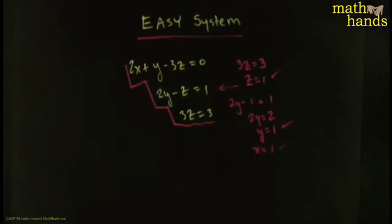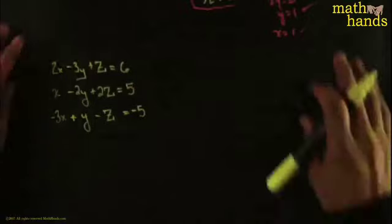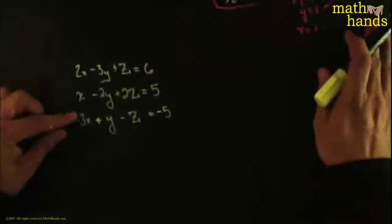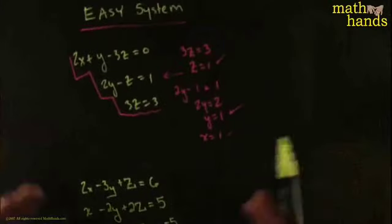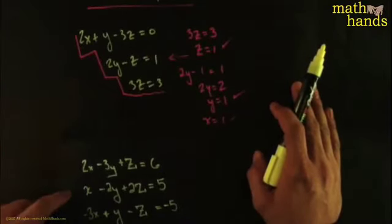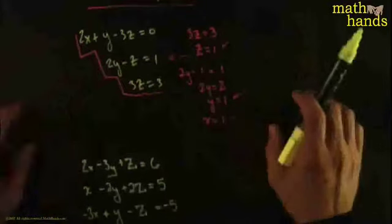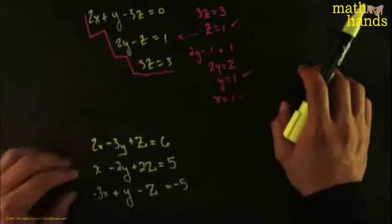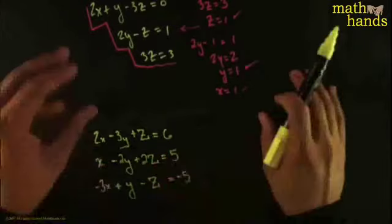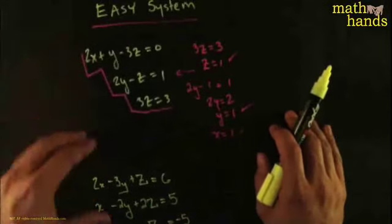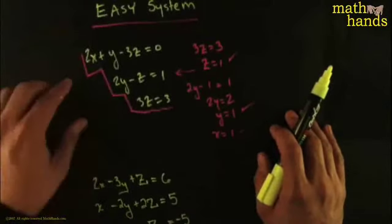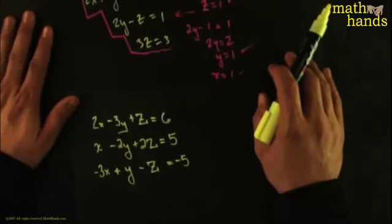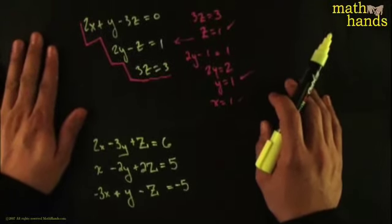Now compare that nice row-reduced system — with its stairway pattern — to a general system that doesn't have it. They are totally different types. The point is that we want to take any system, even if it doesn't look easy, tweak it just a little bit, and turn it into an easy one. When we do that, we say we've row-reduced the system. After row reduction, solving takes about ten seconds.